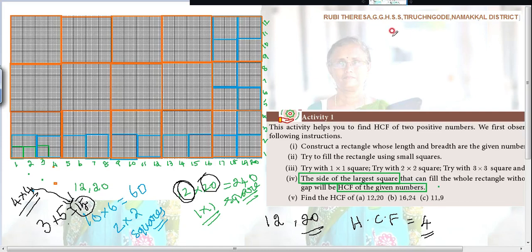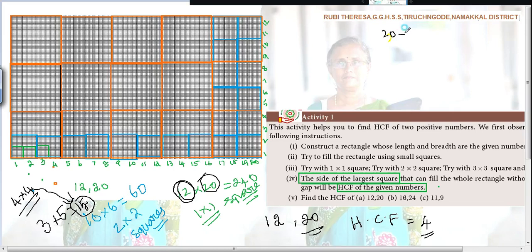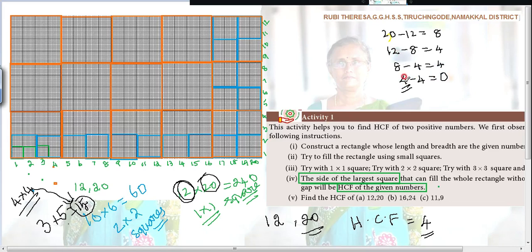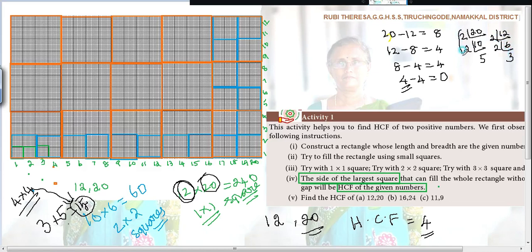There are 3 methods you have learned. Just repeating subtraction: 20 minus 12 is 8; 12 minus 8 is 4; 8 minus 4 is 4 — same numbers have come, so 4 is the HCF. Or next step: 4 minus 4 is 0, so HCF is 4. Otherwise, by prime factorization method: 20 = 2 × 2 × 5; 12 = 2 × 2 × 3. The common factors are 2 and 2, so 2 × 2 = 4. HCF is 4.